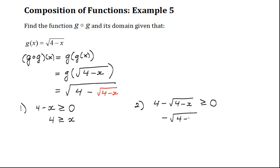Negative square root of 4 minus x has to be greater than or equal to negative 4. Now I'm going to divide both sides by negative 1, and in doing so, I have to flip the direction of the inequality. So now I have this: the square root of 4 minus x is less than or equal to 4.